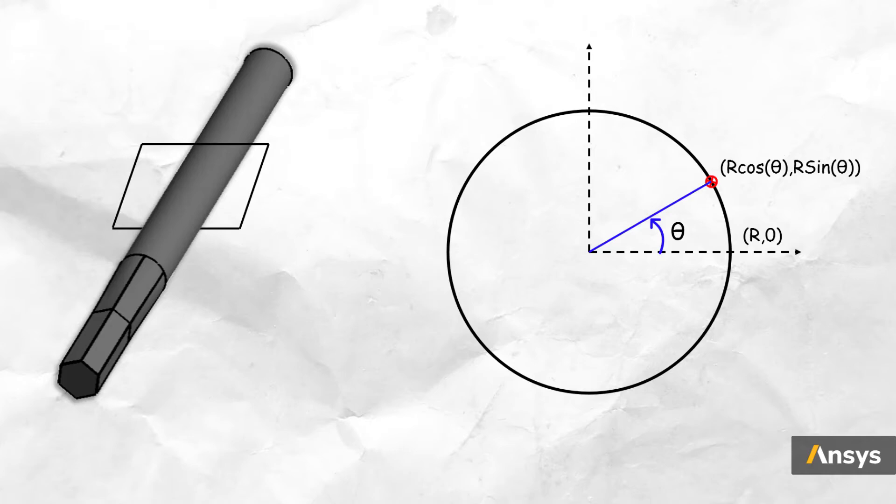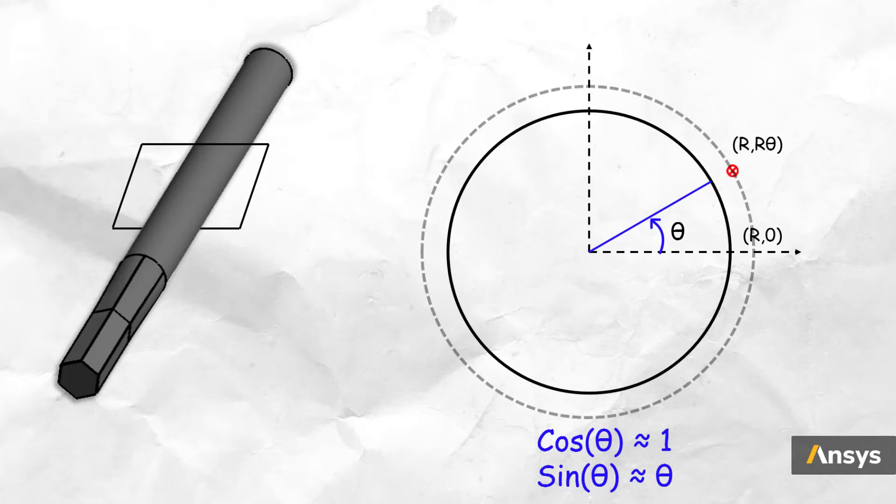Suppose we linearize these equations by applying small rotations assumptions, in which case the coordinates of this point change to r, r theta. If you notice this new position, it's outside the perimeter of the shaft cross section. So if you apply this to other points on the surface, then it appears that the shaft cross section grew radially outward, which is not physical.